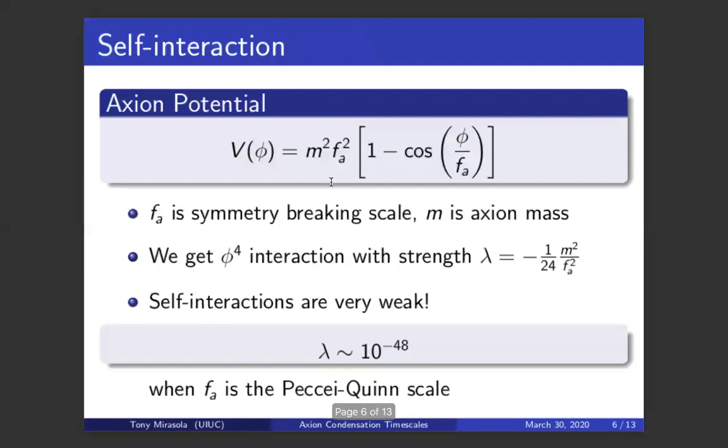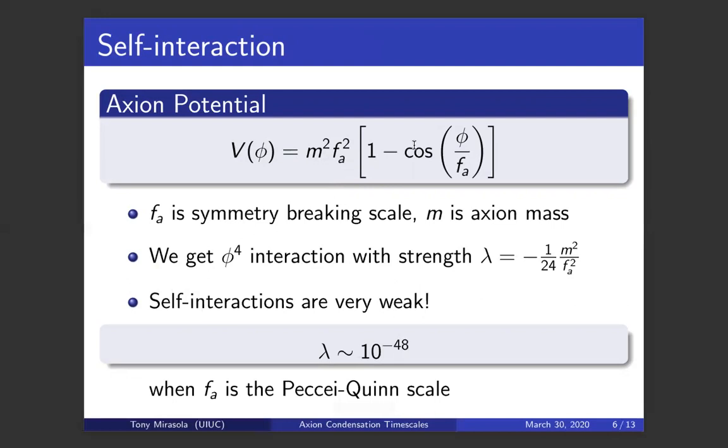The first of these is called the self-interaction and it comes from the axion potential shown here. Here the field φ is the axion field, f_A is the symmetry breaking scale and m is the mass of the axion. This cosine potential leads to a quartic interaction with this coupling strength λ that you can calculate by just expanding this cosine potential. And for the case of the axion, we can calculate what the strength of that quartic coupling is, and it's extremely weak, something like 10^-48.